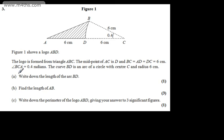In part A for one mark we're asked to write down the length of the arc BD. In general we can say that the arc length is R theta, where R is the radius and theta is the angle measured in radians. So BD is going to be equal to 6 multiplied by 0.4 and that gives us 2.4 centimeters.